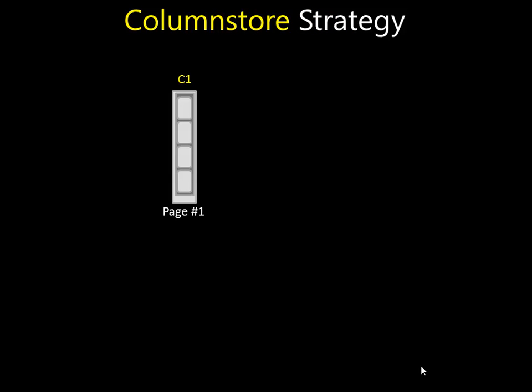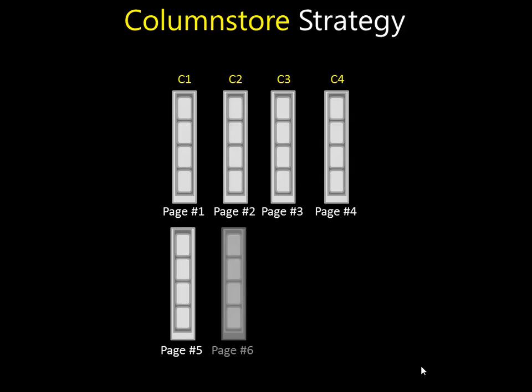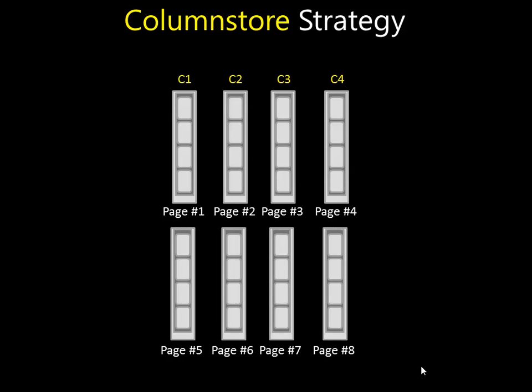In a column store strategy, we approach the problem differently. Instead of storing pages with sets of rows, we store pages with full columns. This gives us much better compressibility because we have a lot more repeating values in a column than across a row. So if we store a page with just all the values of a single column, we can get incredible compression. With column store using X-Velocity, we have pages with a lot more data packed into each page, so there is more data available in RAM. This is one of the fundamental concepts and the reason for the name column store.